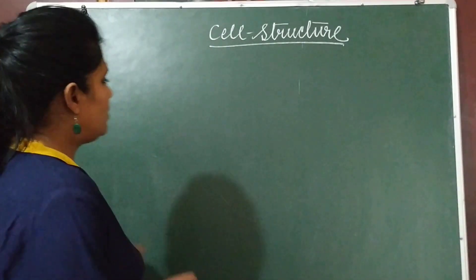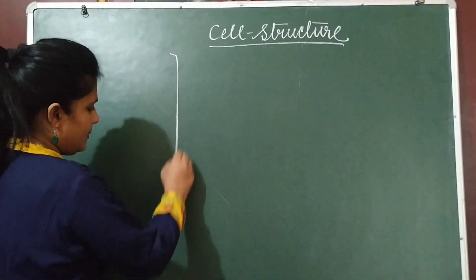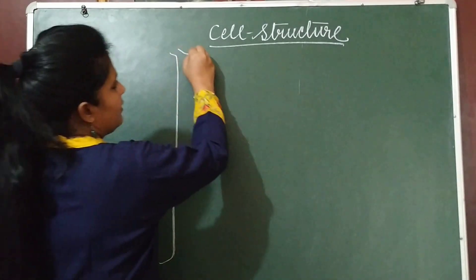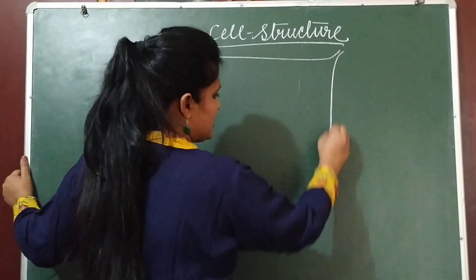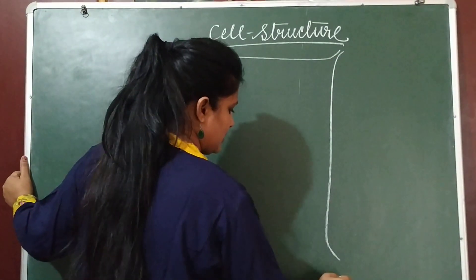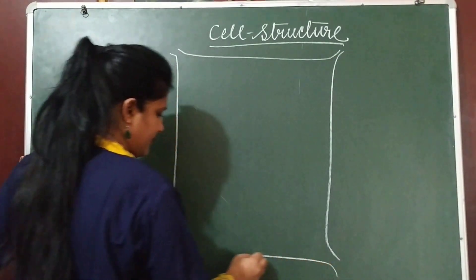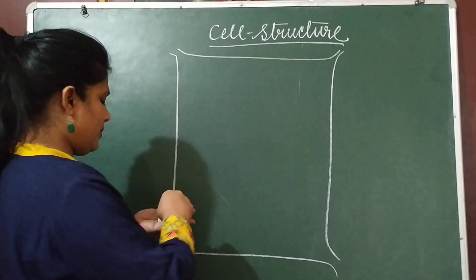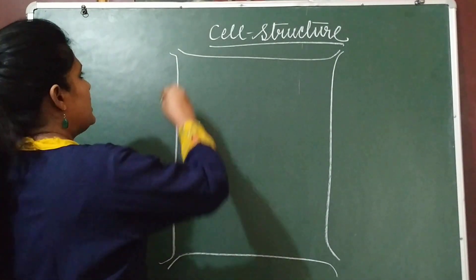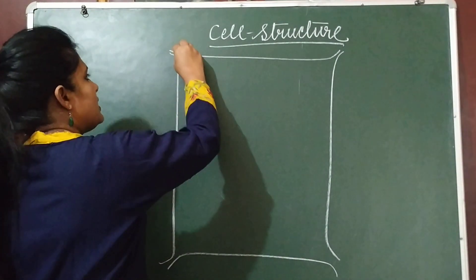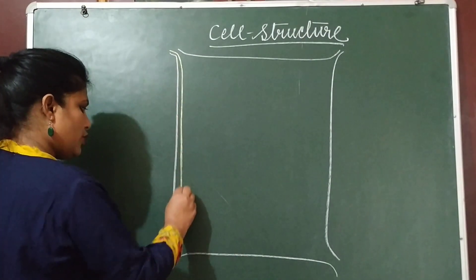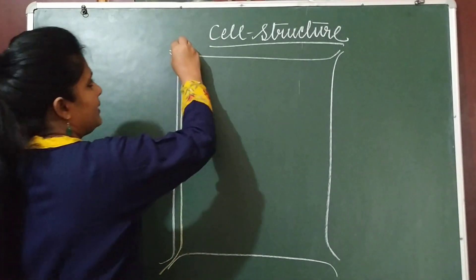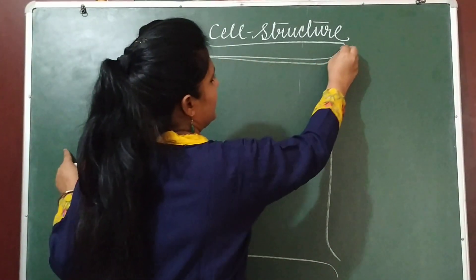In the structure of cell, I will draw first a plant cell. In a plant cell, this outermost layer is the cell wall. It encloses another membrane, which is called the cell membrane.